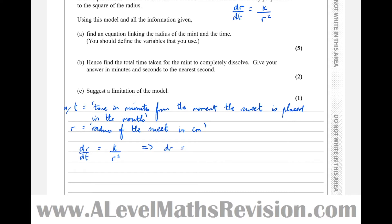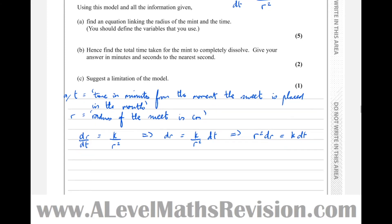Which means that dr equals k over r squared dt. And that tells us that the r's are on the wrong side because the r's need to be on the same side as the dr, and any t's need to be on the same side as the dt. So we multiply by r squared. We get r squared dr equals k dt. And now we're ready to integrate both sides.